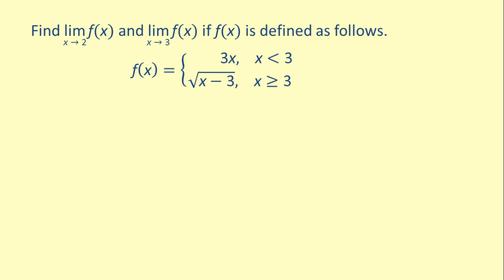If these two limits are equal, then the limit of the piecewise function is equal to that value. If the limits are not equal, then the limit does not exist. Here we have a piecewise function that is defined as 3x for x less than 3, and the square root of x minus 3 for x greater than or equal to 3.